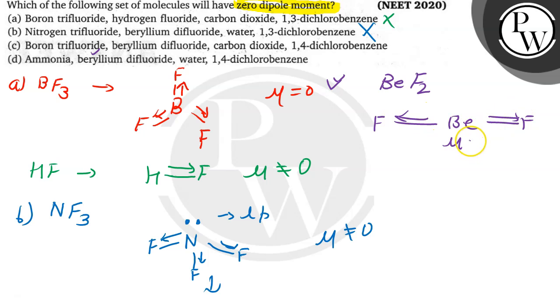Beryllium difluoride means this dipole moment will be F-Be-F, so one this side and one this side, means dipole moment is zero. Till here it is correct. Next we have carbon dioxide, that is CO2. For CO2, C double bond O and double bond O, so again dipole moment will be zero. Here also dipole moment is zero.